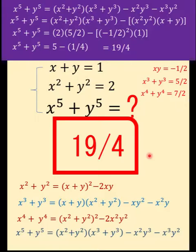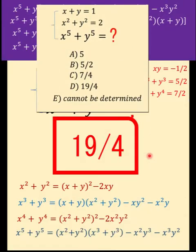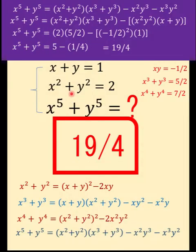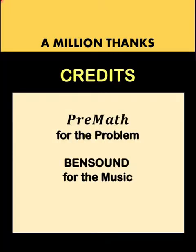Therefore, the value of x to the fifth plus y to the fifth is 19 over 4. Going back to our problem, that is letter D — so our final answer is 19 over 4, letter D. Thank you very much, and we hope to see you again in our next video. Bye for now.